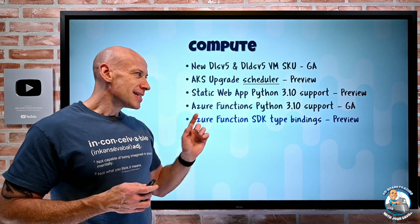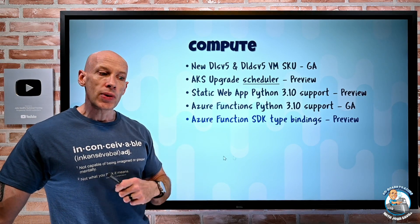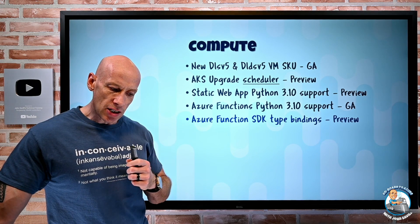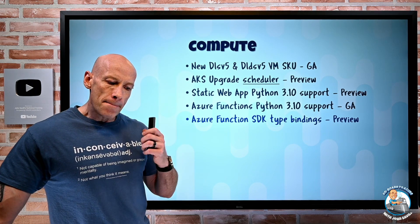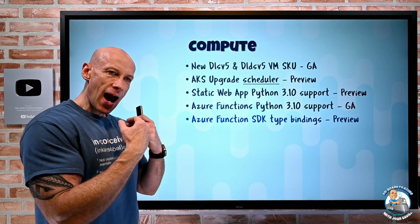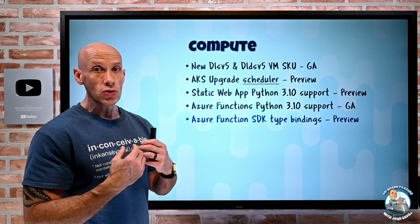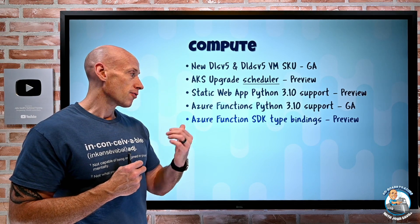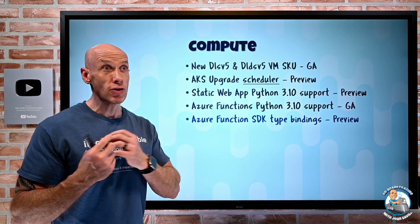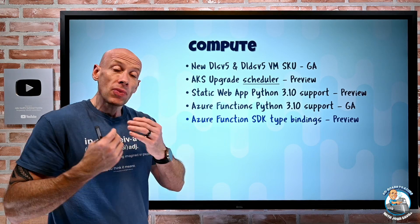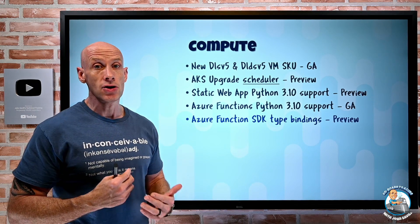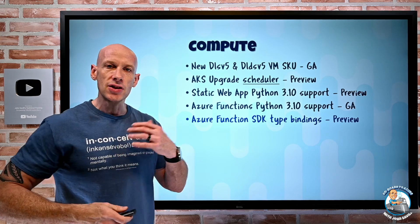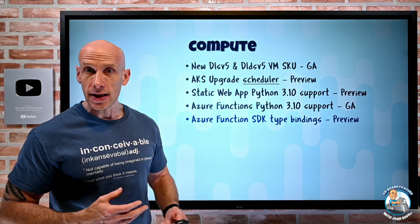Azure Functions now has an SDK-type binding. Functions are event-driven with triggers and additional bindings for input and output. With SDK types, other Azure SDKs can now be used for those triggers and bindings. Initially it's restricted to .NET isolated workers and only for blob SDKs. For example, instead of just being sent a blob, you could stream a blob, handling much larger amounts of data. This will grow over time as more Azure SDKs are supported.